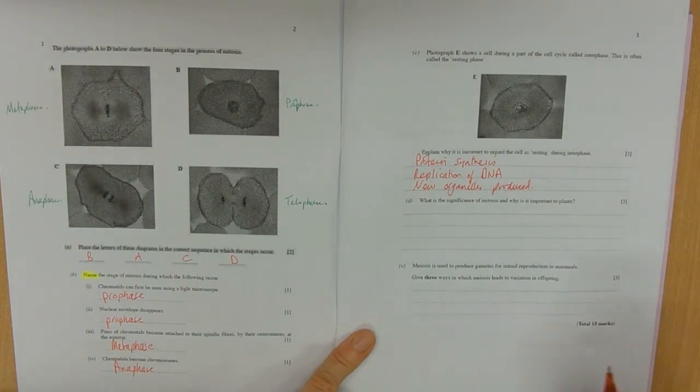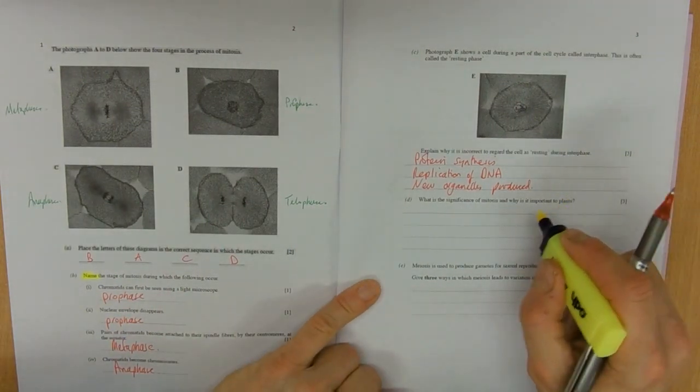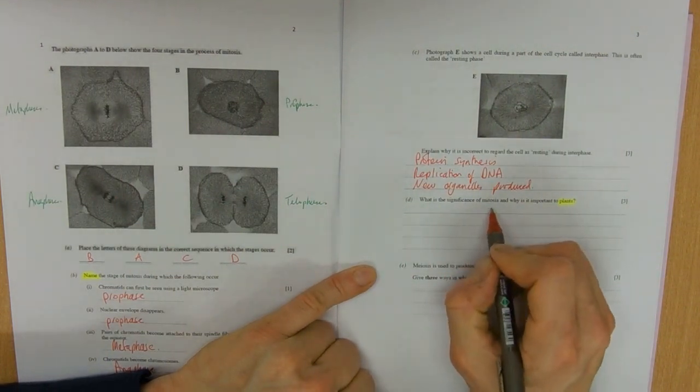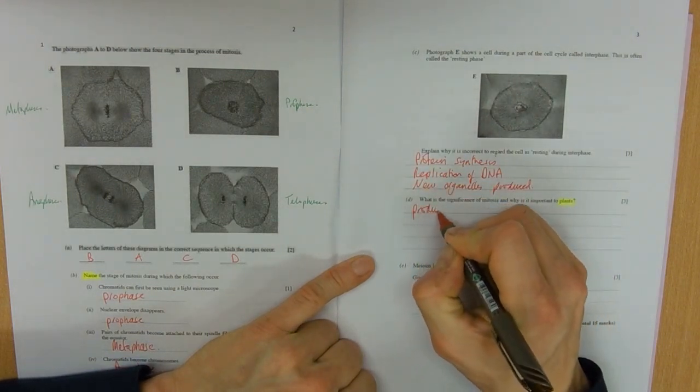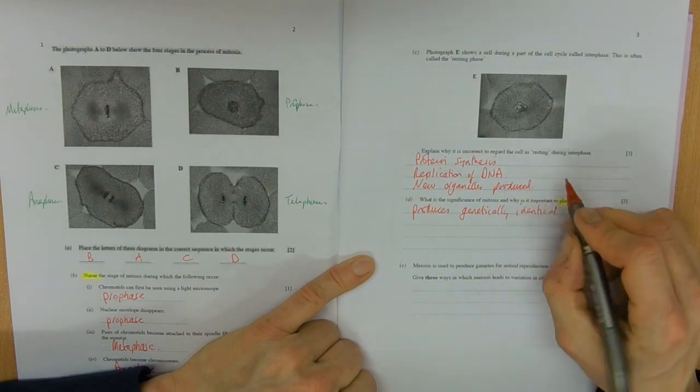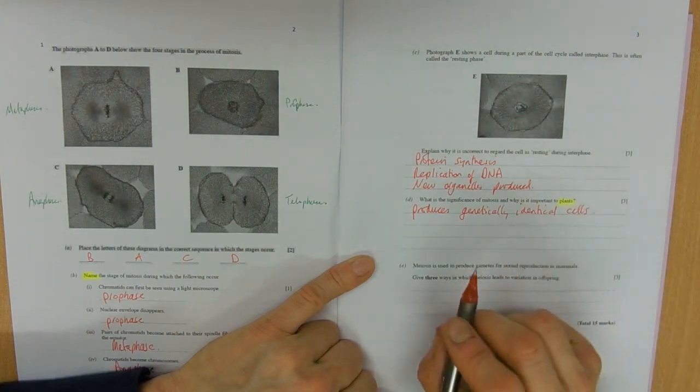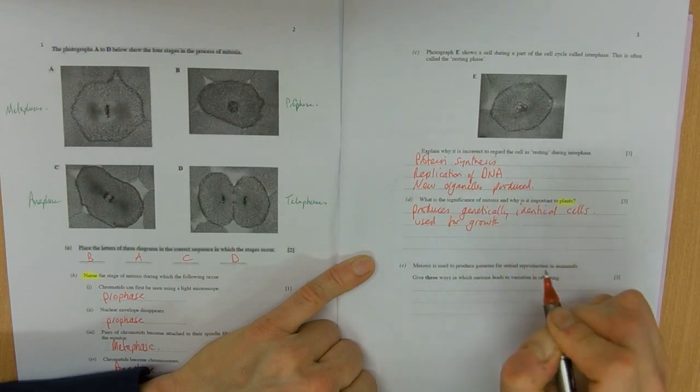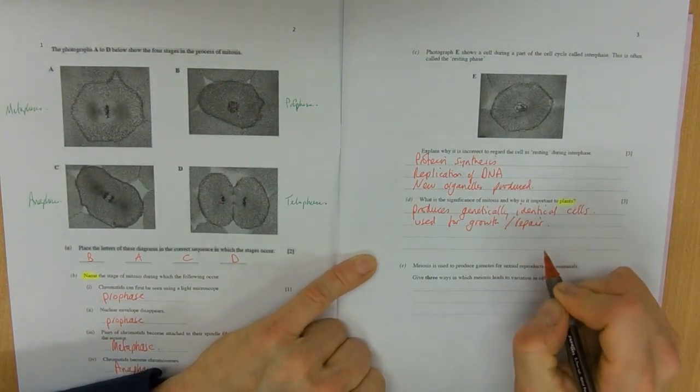So three fairly straightforward marks. What is the significance of mitosis and why is it important to plants? Remember, don't say anything animalish if it's asking for plants. There are some general things for mitosis that will be useful for plants. So mitosis produces genetically identical cells, and then these cells can go on to be of any use whatsoever, but you know, for example for growth, used for growth or repair. Standard answers so far.